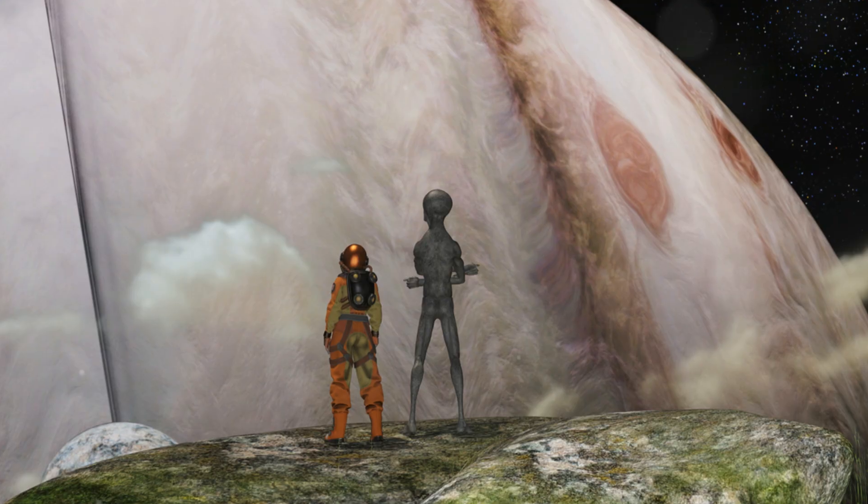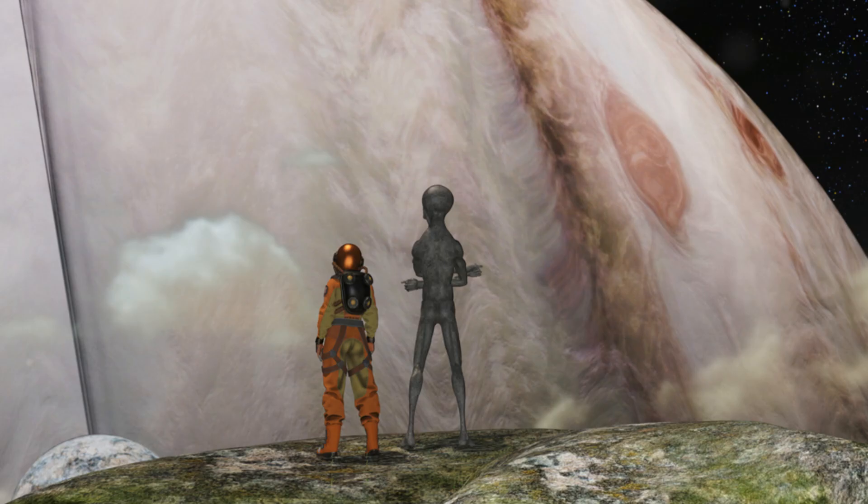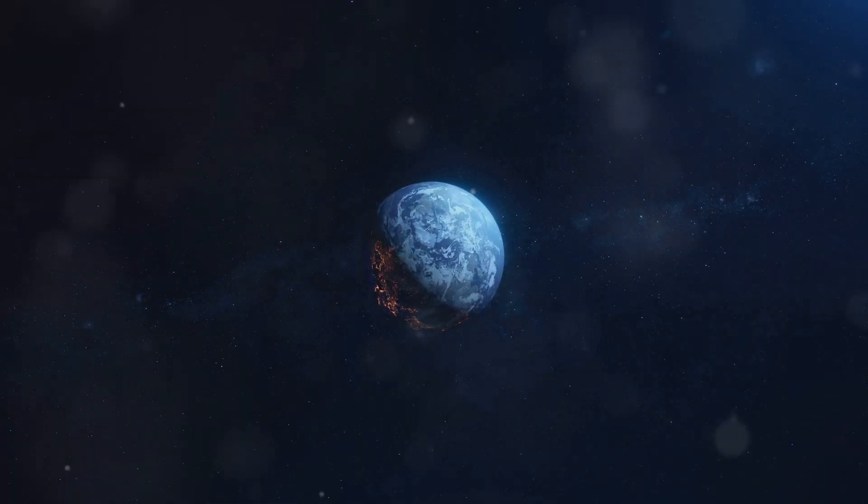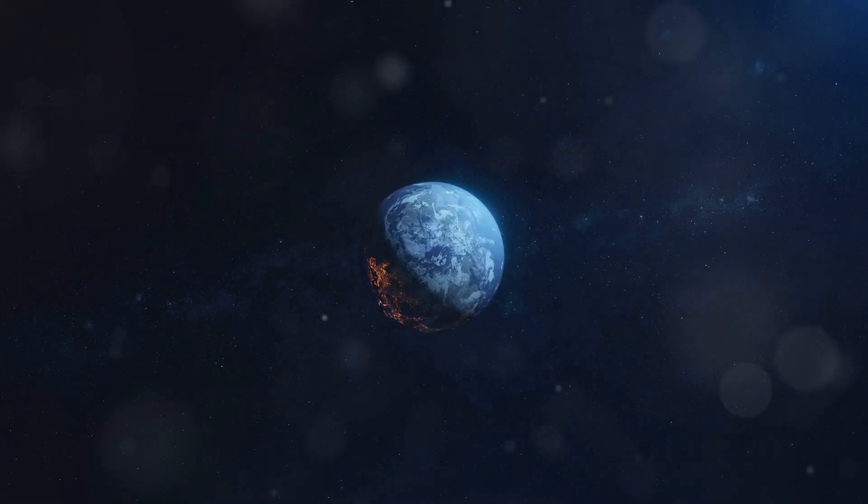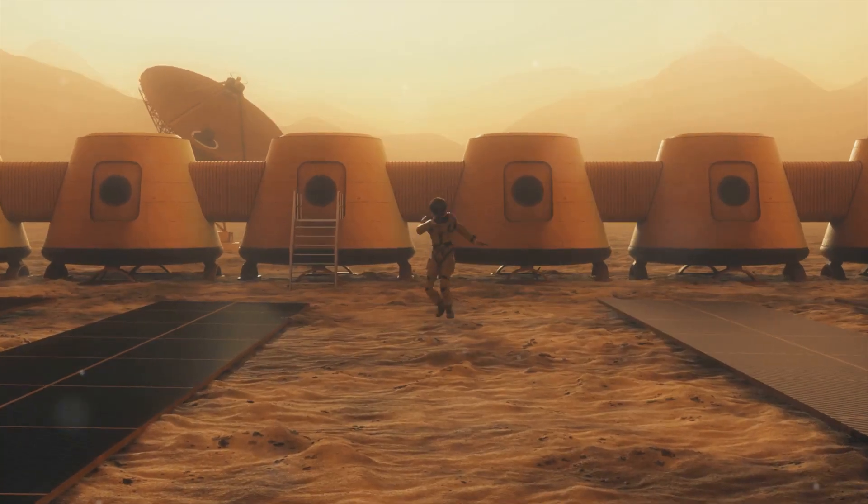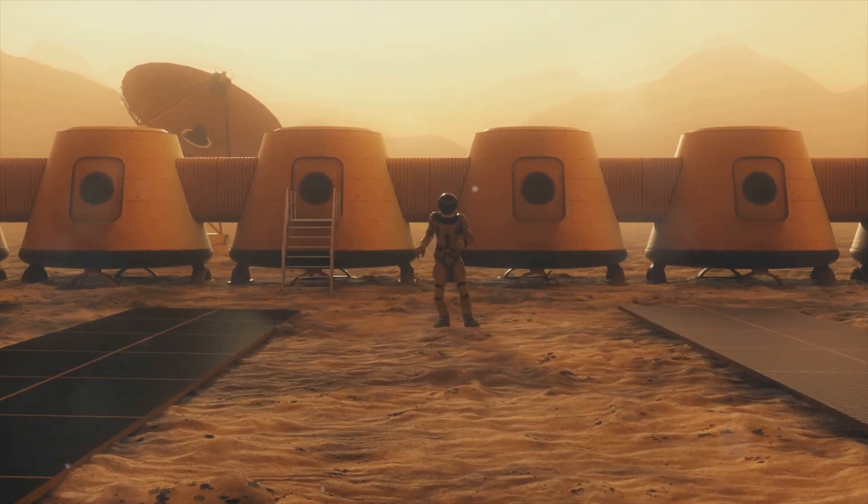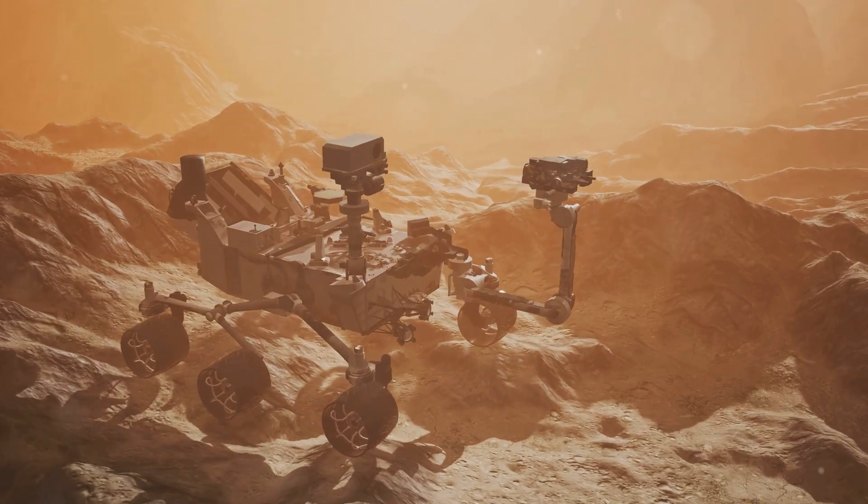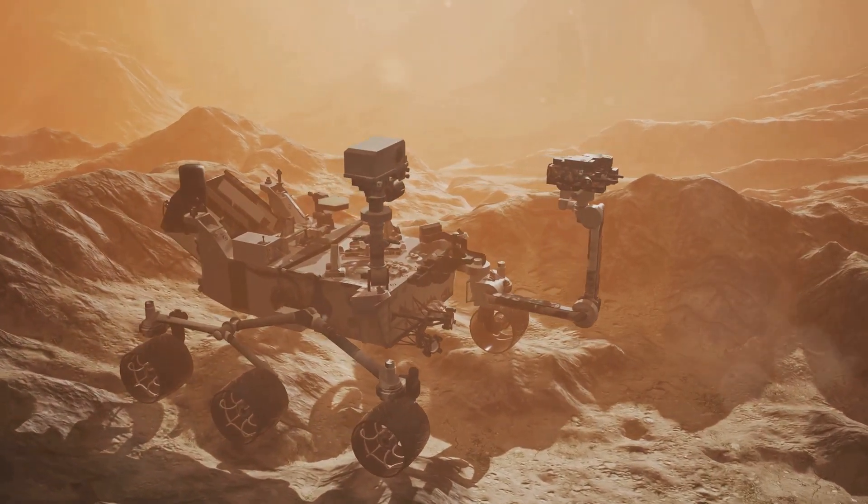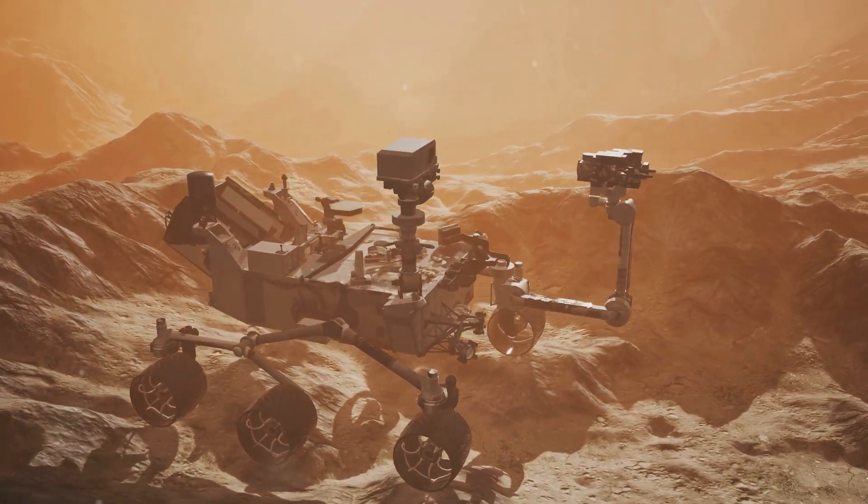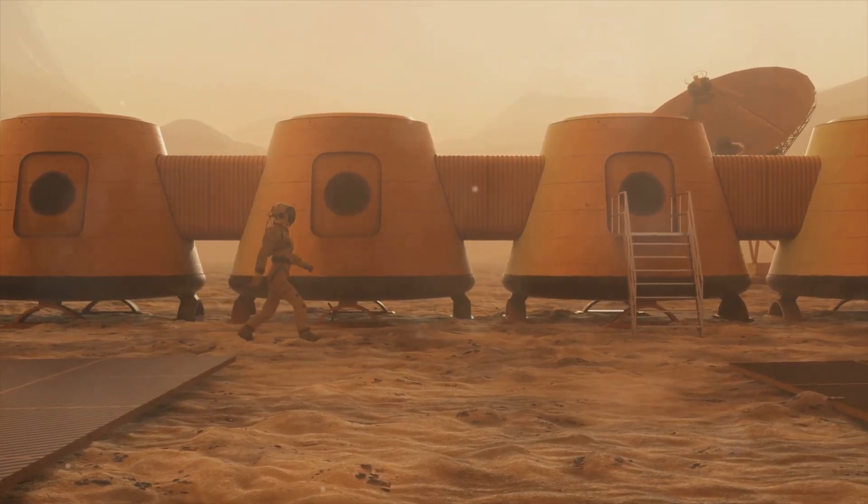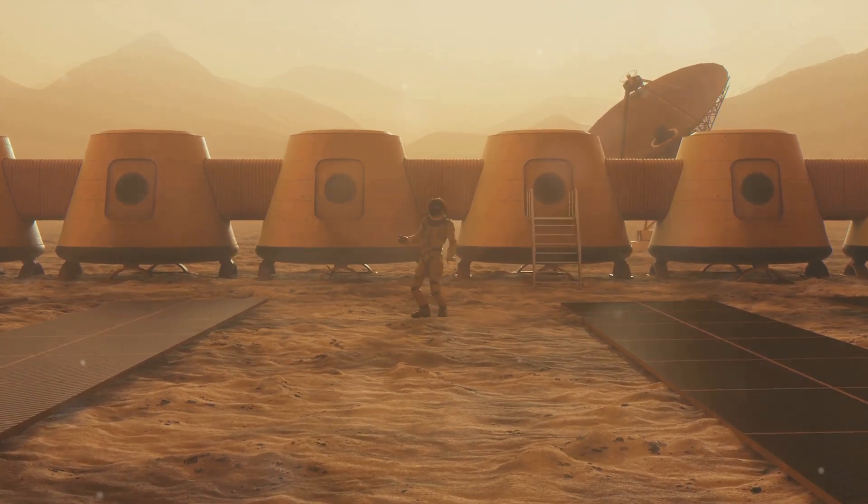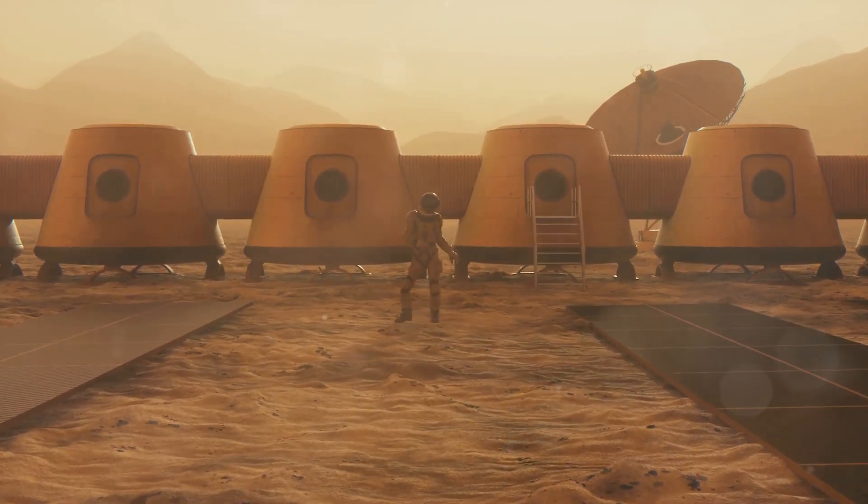Could we live on another planet? Have you ever wondered if we could live on another planet? It's a question that scientists are trying to answer. Right now, Earth is the only planet we know of that can support life. Some planets, like Mars, might have been habitable in the past. Scientists are searching for signs of past life on Mars by sending rovers and probes to explore its surface. In the future, we might be able to live on other planets or even build space stations to live in. It sounds like science fiction, but it could become a reality one day.